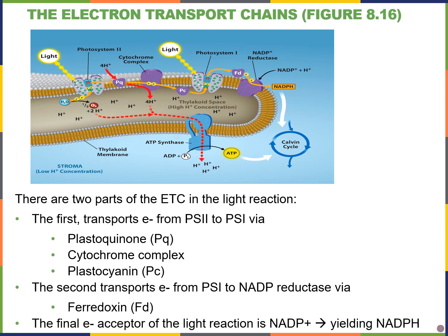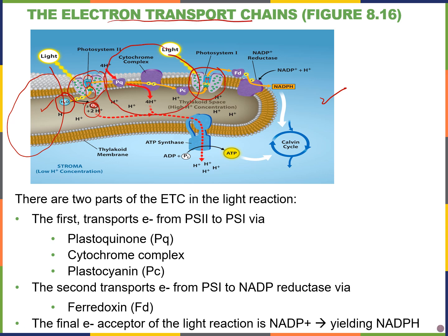Looking at the light reactions in more detail — we have the thylakoid with the stroma on the outside and the lumen on the inside. Our photosystems are embedded within the thylakoid membrane. Light is absorbed by the pigments, exciting the electrons from chlorophyll a to the final electron acceptor. The missing electrons from chlorophyll a are replaced by electrons donated from water, producing oxygen as a product. Those electrons then continue down the first electron transport chain, first passed to plastoquinone (PQ).